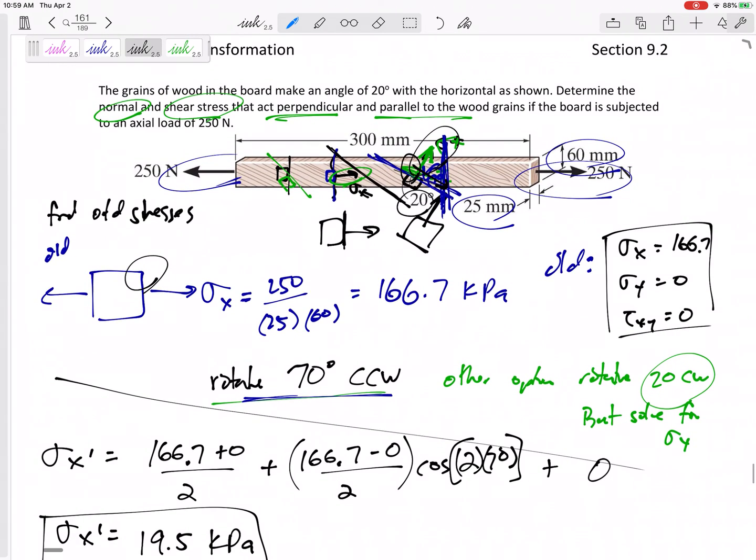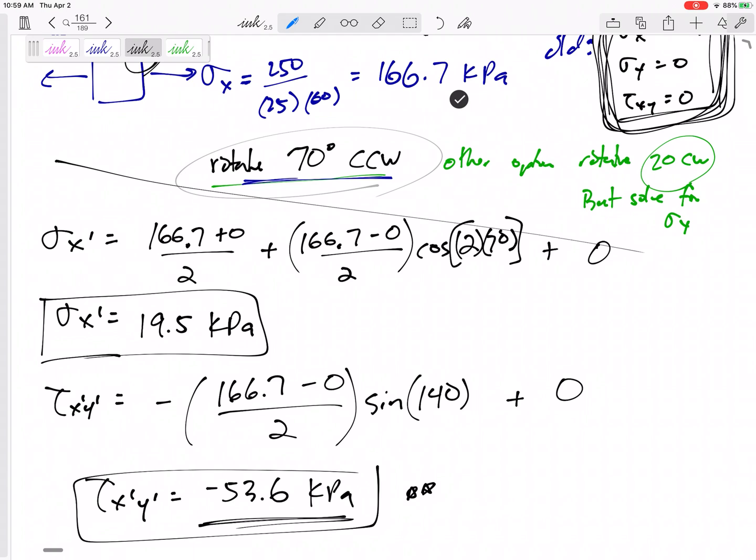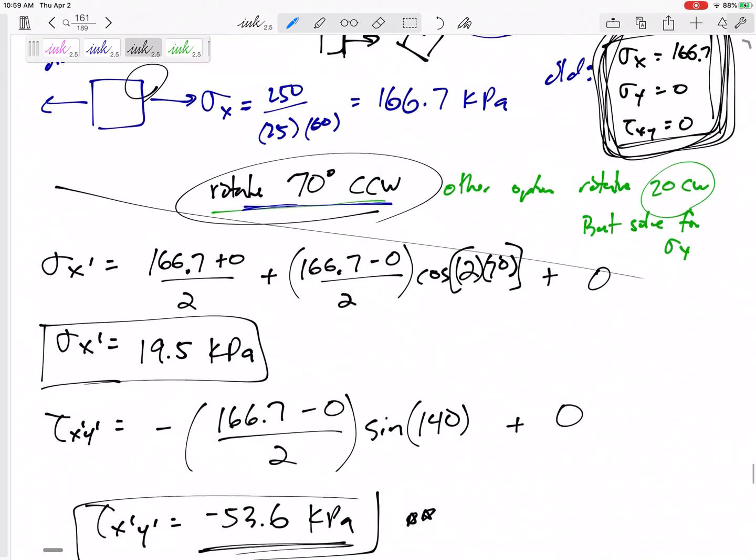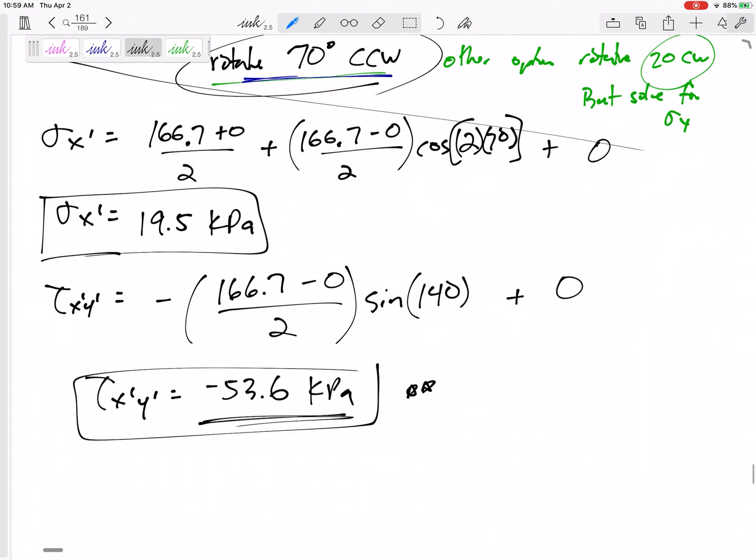But step back. What do we do? We took a figure in order to get this old sigma X, sigma Y, and tau XY. And then we just plugged into our equations, knowing that we wanted to rotate it 70 degrees counterclockwise. Counterclockwise is positive. And plug in to find the new stress perpendicular to the cut, the new stress parallel to the cut.